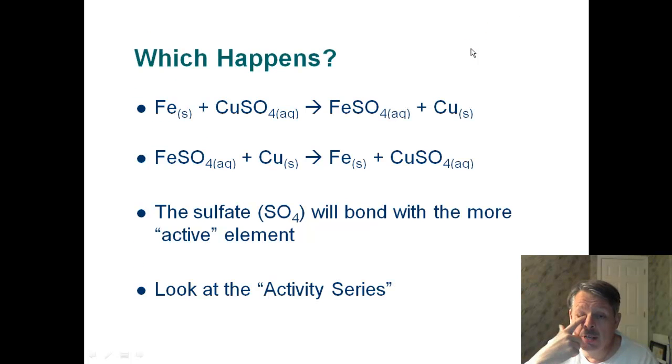So let's look at an example. If I take iron and I combine it with copper sulfate, iron's a solid, and I throw it in a solution of copper sulfate, the question is, will the iron replace the copper and produce iron sulfate and a copper metal? Or would the reverse be true? If I took a solution of iron sulfate and dropped a piece of copper in it, would we produce iron and copper sulfate?